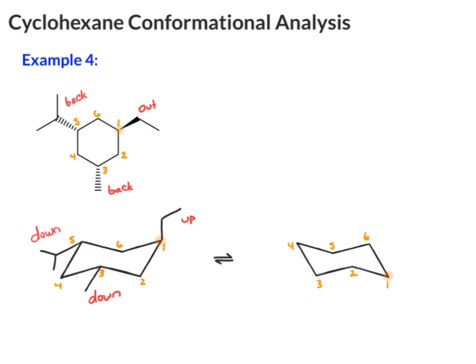Now we do the ring flip. On carbon one, this ethyl goes from axial to equatorial. And it's still up. On carbon three, the methyl goes from equatorial to axial. And then on carbon five, the isopropyl goes from equatorial to axial. Like that.